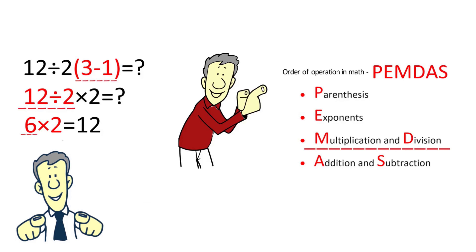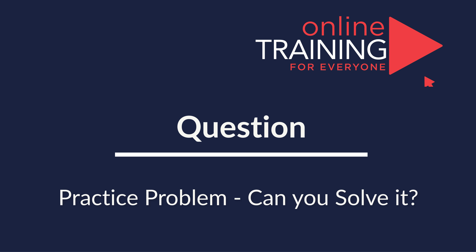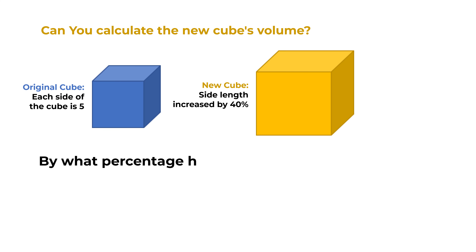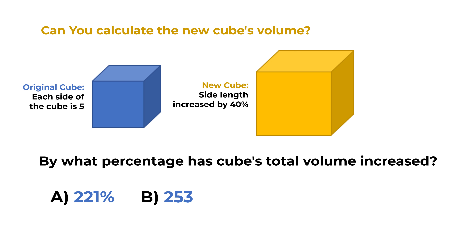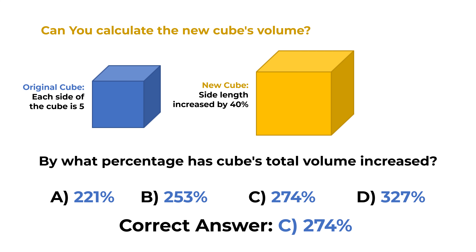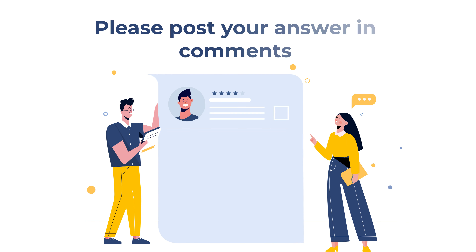Did you solve this challenge on your own? Was it easy for you? Please share your thought process and your solution in the comment section of this video. Here's the practice problem: a 5 by 5 by 5 cube has its side length increased by 40%. By what percentage has the cube's total volume increased? You have 4 different choices: Choice A 221%, Choice B 253%, Choice C 274%, and Choice D 327%. The answer is Choice C, 274%. Please make sure to post your comments in the comment section of this video.